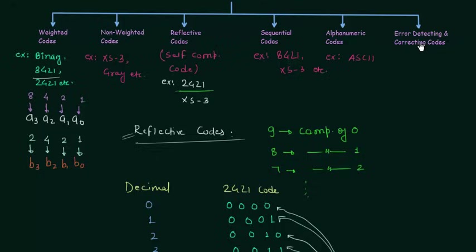The last type of code is error detecting and correcting codes. This code is used to detect and also correct errors. When we transmit digital data from one system to another, noise gets added to it. Noise is an unwanted signal that is added to our transmitted data along the path, causing errors in the received signal. To detect and correct these errors we use error detecting and correcting codes. One important example is the Hamming code, which is very important for your exam and will be covered in great detail.